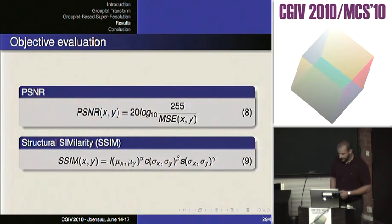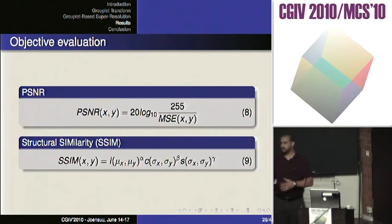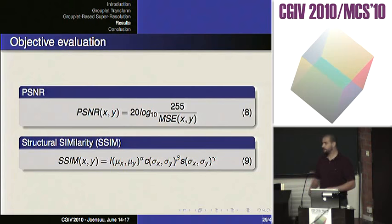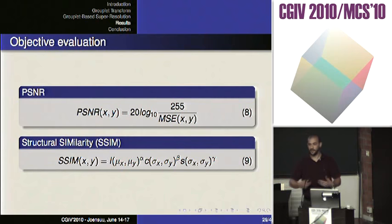From the objective evaluation point of view, we used metrics that may not be the best or most optimized. But we used them because they are available, everybody can use them, and they allow people to make comparisons. If we used our own or more complex metrics, it would be very difficult for others to compare with our results.